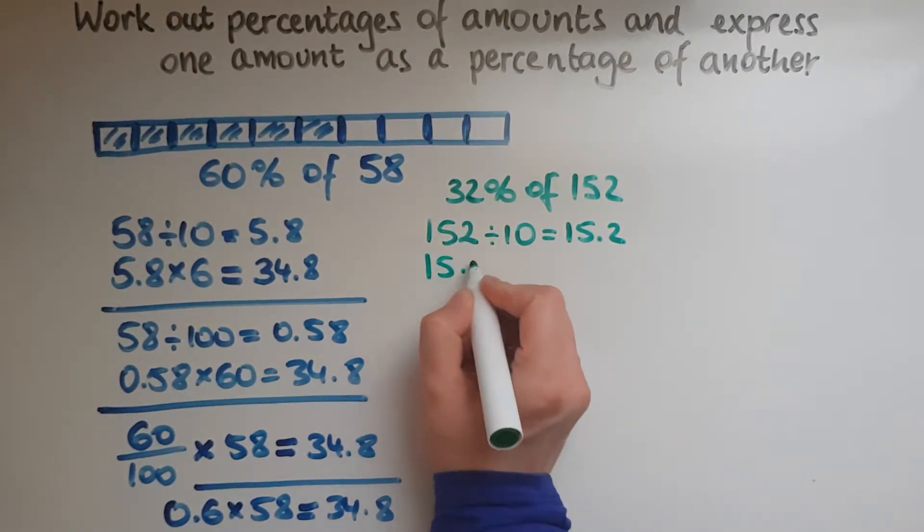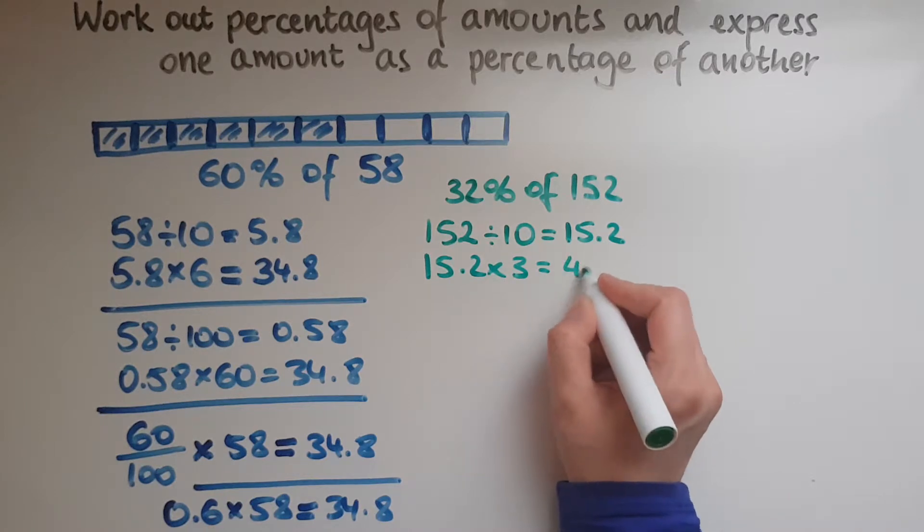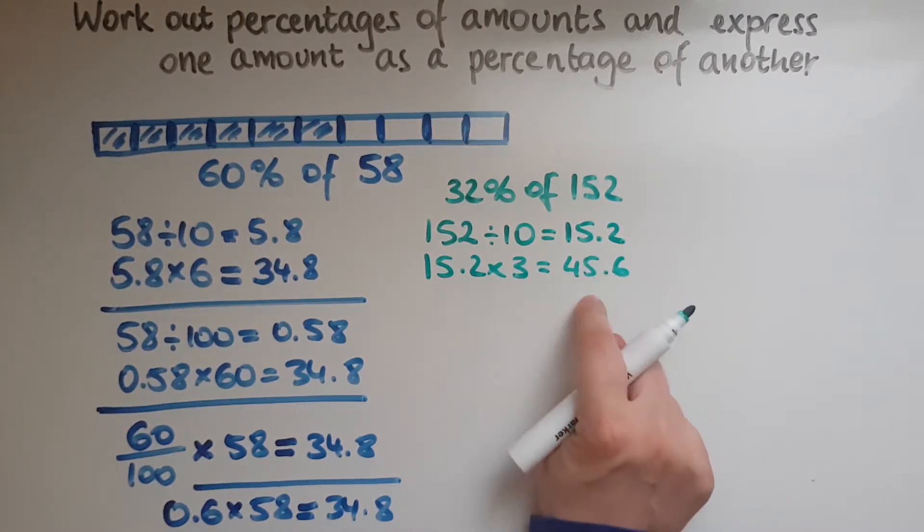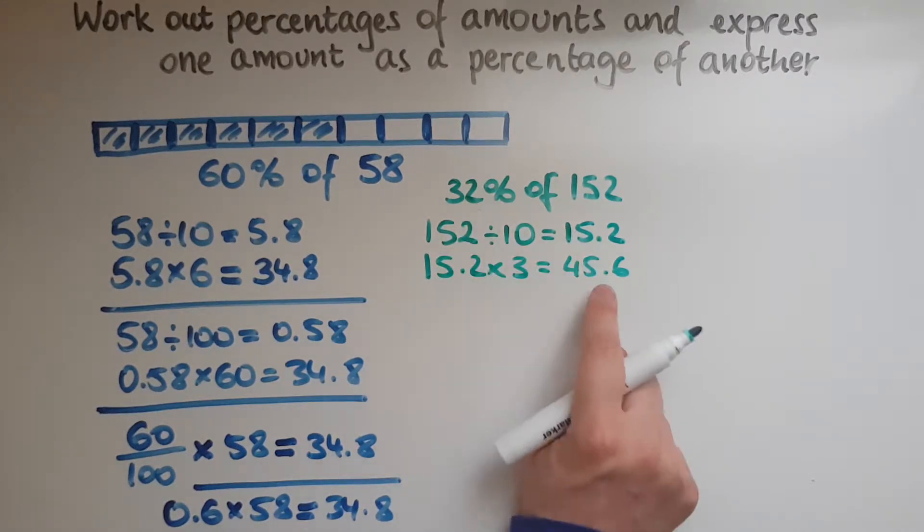So 15.2 times 3 that is 45.6. So I've got 30%. Now I just need 2%. So if I find 1%, I can double it and add it on top of this.